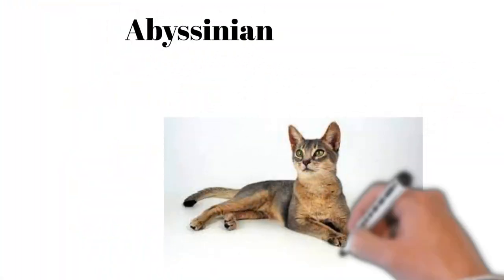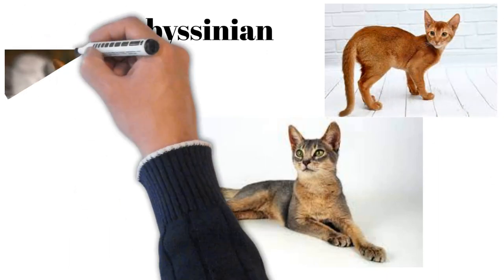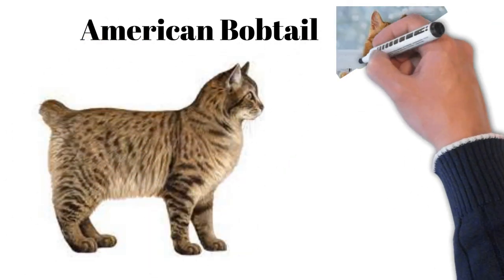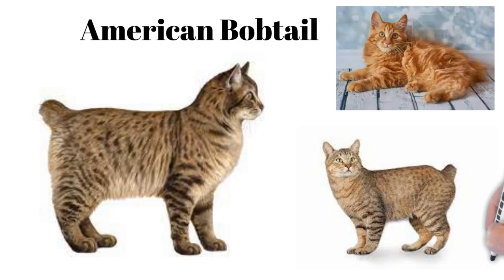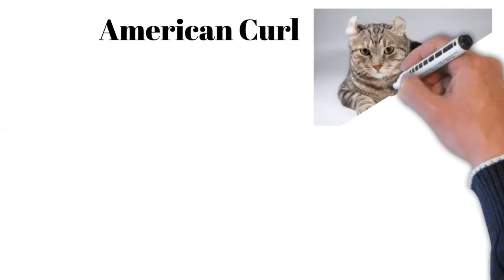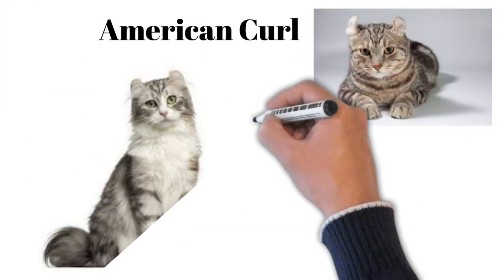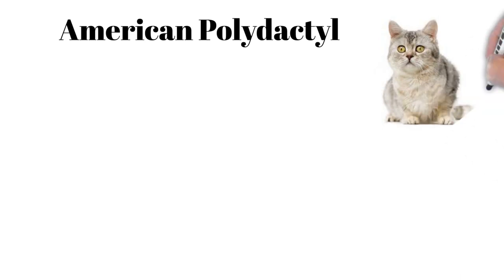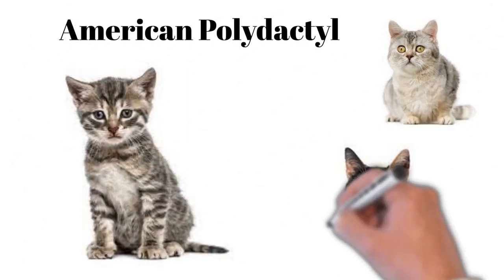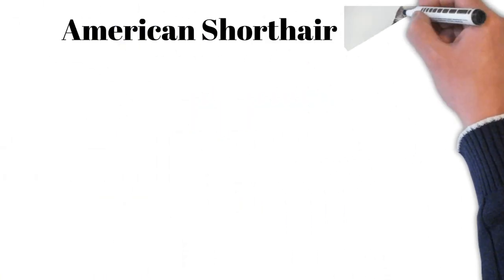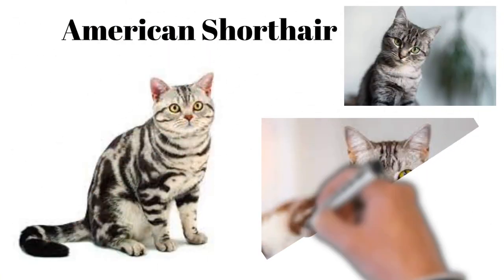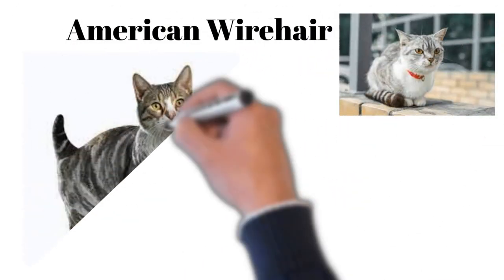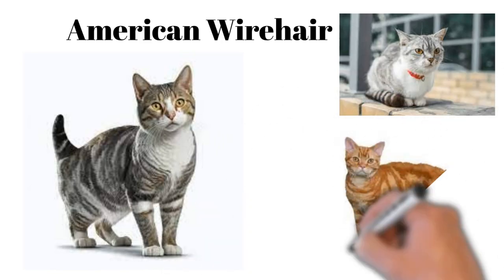Abyssinian: active, elegant, highly intelligent, loves climbing and interactive play. American Bobtail: friendly, adaptable with a distinctive bobbed tail, loves families. American Curl: recognizable by unique backward curling ears, playful and affectionate. American Polydactyl: extra toes, very agile and intelligent, friendly and sociable. American Shorthair: healthy, easygoing, family-friendly with a wide color range. American Wirehair: rare, springy coat, affectionate, playful and adaptable to environments.